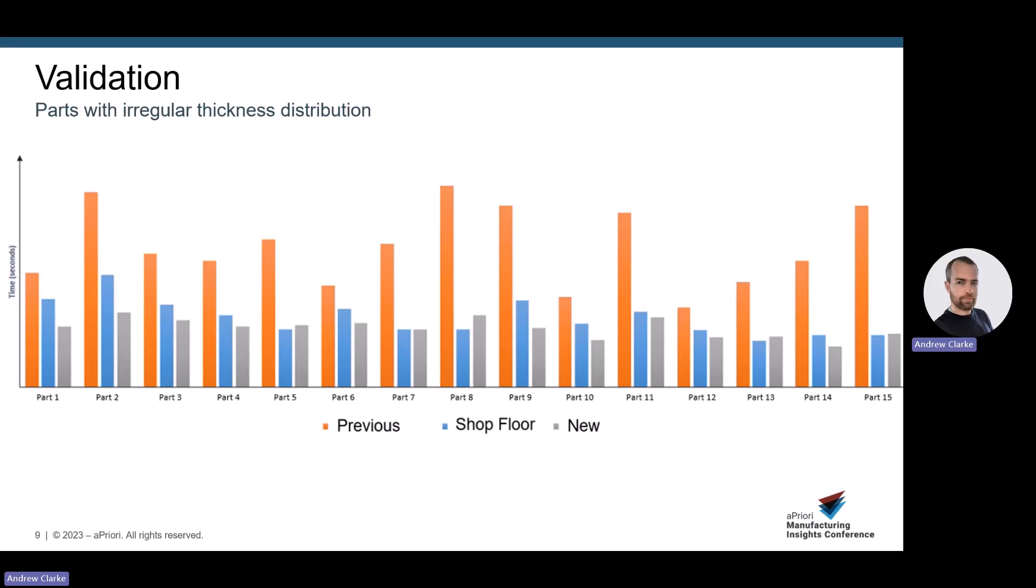The result of this work is significantly improved nominal wall thickness calculations and cycle time for parts with irregular wall thickness distribution. This enhancement was validated with the support of data from six different customers from different industries, including several of whom were able to provide us shop floor data of actual production cycle times. We released this functionality in June 2021 in our 21.1 software release.